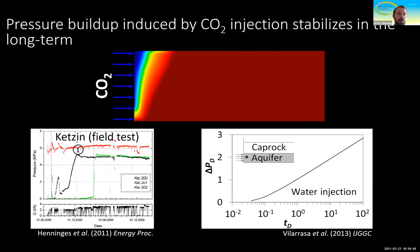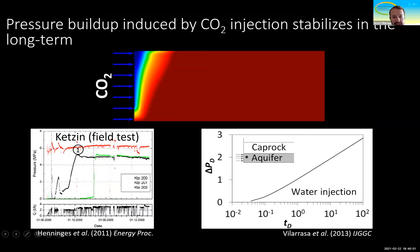Now let's take a look at how pressure evolves when we inject CO2 into a saline aquifer. CO2 induces a two-phase flow. Initially, when CO2 is injected into the wellbore, it will start desaturating the pores around the injection well. As a result, the relative permeability decreases, so at the beginning of injection we have a region around the injection well with reduced permeability.